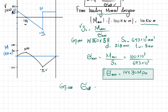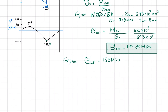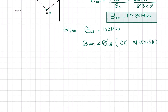The maximum bending stress is 144.30 MPa and the allowable stress is 150 MPa. Since maximum bending stress is less than allowable stress, the W250×58 beam can be used for this loading. We will also check it for shear stress.